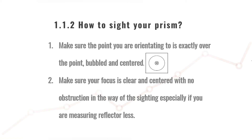Another very important point to consider is to make sure that your focus on your total station is always clear so that you don't have a blurry vision, which could cause you to not align your prism exactly in the center and which might automatically introduce an error in your survey. Always make sure that your focus is 100%, and make sure that there's no obstruction in the way between you and the prism, especially if you're measuring reflectorless. With a reflectorless measurement, it normally takes the first reflection or the first bounce that it receives from the total station. So if there is a tree in the way, or a leaf, or even some grass, it would automatically reflect on those objects and not on your prism, which will then again cause some error on your site. Always make sure that there's no obstructions when you sight your prism.